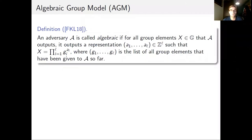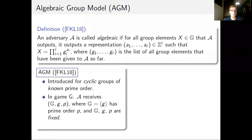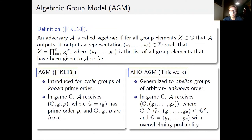The algebraic group model was introduced by Fuchsbauer, Kiltz, and Loss in 2018. An adversary is algebraic if, for every group element it outputs, it also outputs a representation expressing that element as a product of input group elements raised to integer coefficients. Originally defined for cyclic groups of known prime order with a fixed generator, we generalize this to abelian groups of unknown order: at the start of a game, the adversary receives a randomly sampled group and N random elements that generate the group with overwhelming probability.